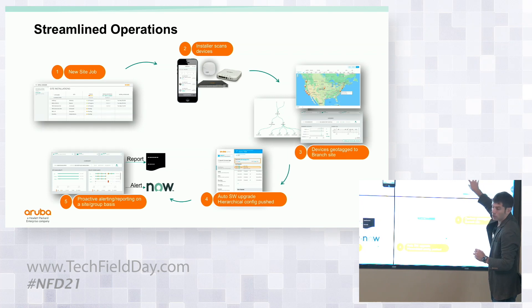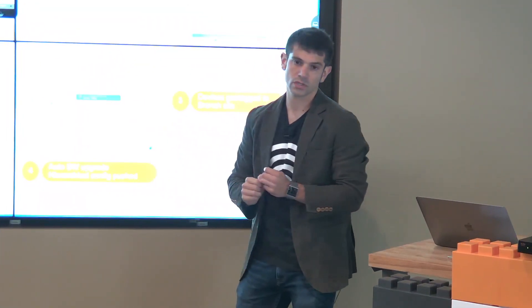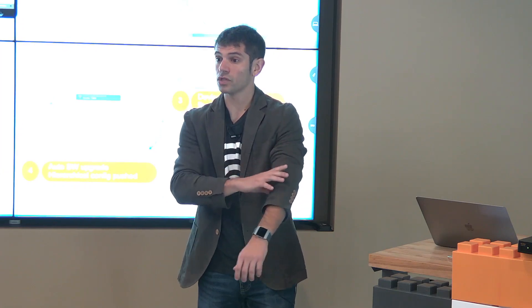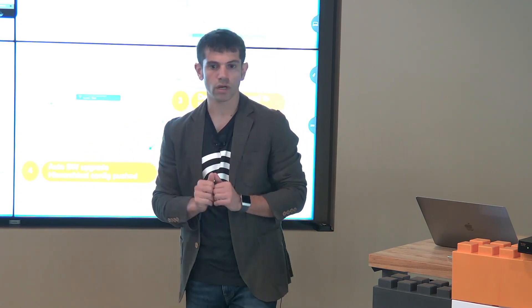That eventually leads to devices popping up in the map, populating the topology, giving site visibility. You inherit the configuration from the group — and not only the configuration, you can even mandate a specific software version. The device came out of the box from your distributor, who knows which firmware version it has. It'll connect to Central, and Central will say: if it's in group Europe, I want this firmware, because that's what I've standardized for that type of site.